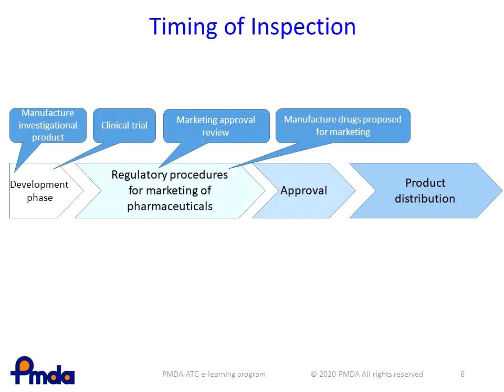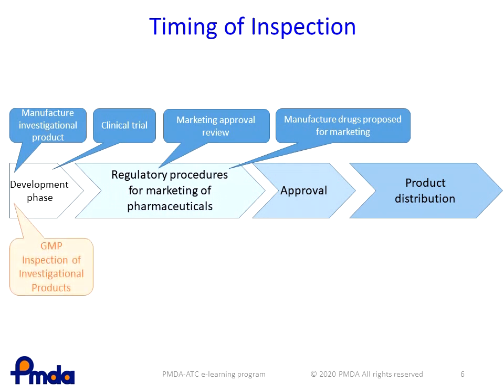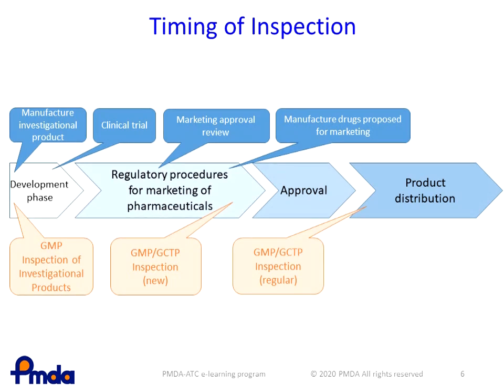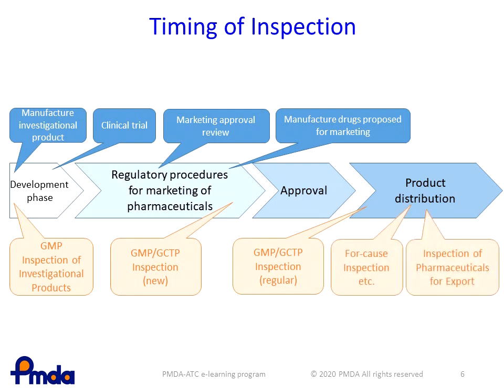Various types of inspections are conducted throughout the life cycle of products, by which the quality of marketed drugs is ensured. In the development phase, GMP inspection of investigational products is conducted. In the regulatory procedures for marketing approval of pharmaceuticals, GMP-GCTP inspection for new products is conducted. After the approval, GMP-GCTP inspection is conducted on a regular basis. If necessary, for-cause inspection and inspection of pharmaceuticals for export are conducted.